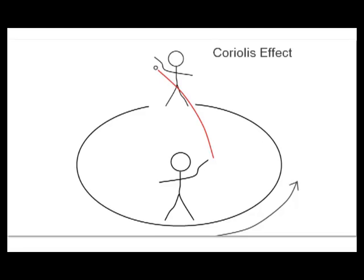Coriolis effect. Catching a ball on a spinning roundabout is difficult because the catcher has moved in the time it takes the ball to get there. This is called the Coriolis effect.